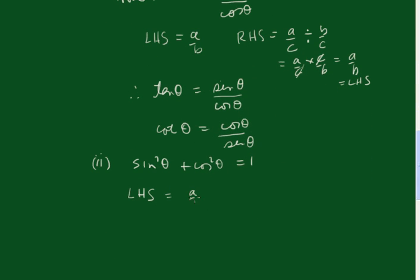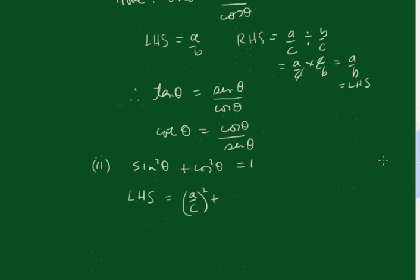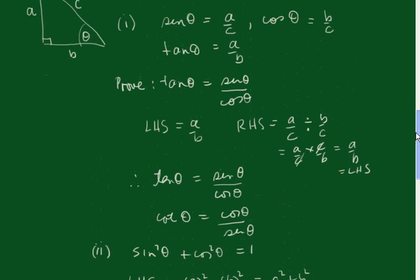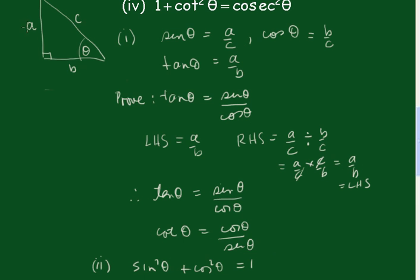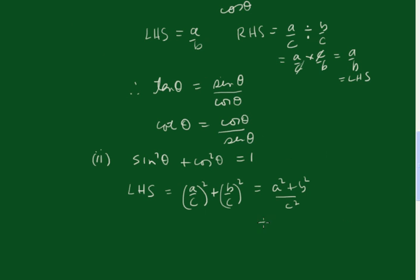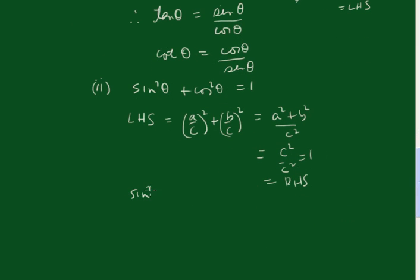Sin θ was A over C, so sin²θ is A over C, all squared. Cos θ was B over C, so cos²θ is B over C, all squared. That gives us A² plus B² over C². Since this is a right-angle triangle, by Pythagoras, C² equals A² plus B². So we replace A² plus B² with C², giving C² over C², which equals 1 — the right-hand side. Therefore, sin²θ plus cos²θ equals 1.